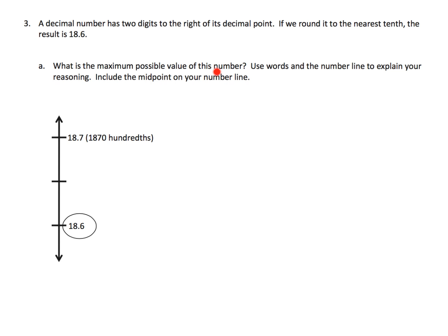Use words and number line to explain your reasoning. Okay, so we know the number has to have two decimal places, all right? So it's going to start with 18 point blankety blank, all right. That's our number.